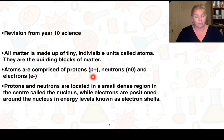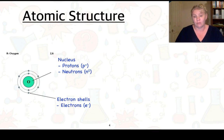Atoms are comprised of protons which are positive, neutrons which are neutral, and electrons which are negative. Those protons and neutrons are located in a small dense region in the center that's called the nucleus, whilst electrons are positioned around the nucleus in energy levels known as electron shells.